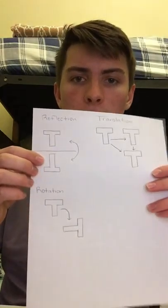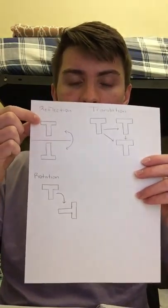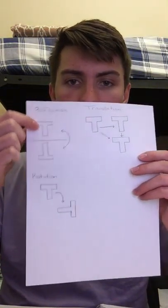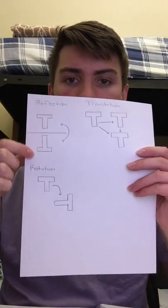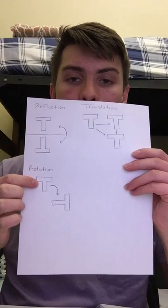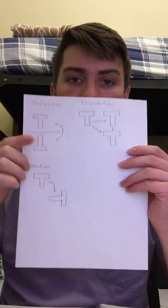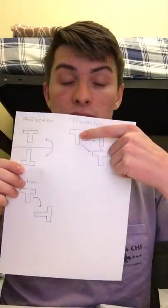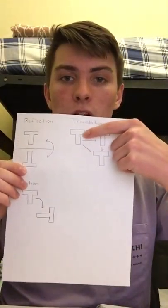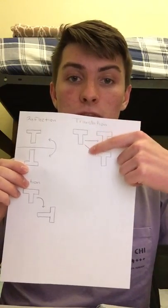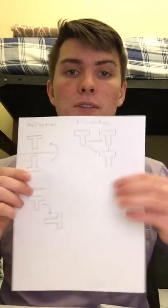Some of the basic symmetries that were discussed were reflection, translation, and rotation. I have a couple of examples of those here. This is an example of reflectional symmetry, this is an example of rotational symmetry where the T is just rotated 90 degrees, and this is an example of translational symmetry where the T is physically just moved around in space.